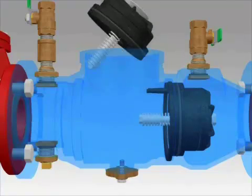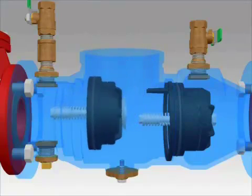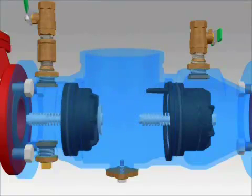Install the number 1 check in the body and close the number 2 test cock to hold the check in place. If the valve was not drained, water may squirt from the number 2 test cock as the check is installed.